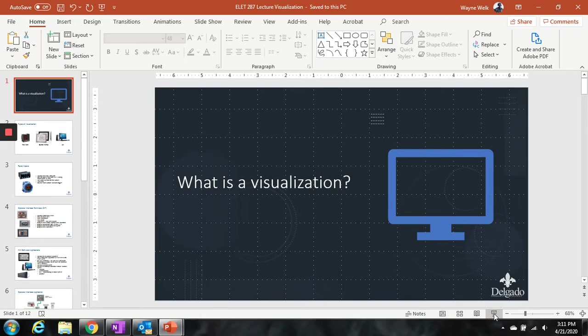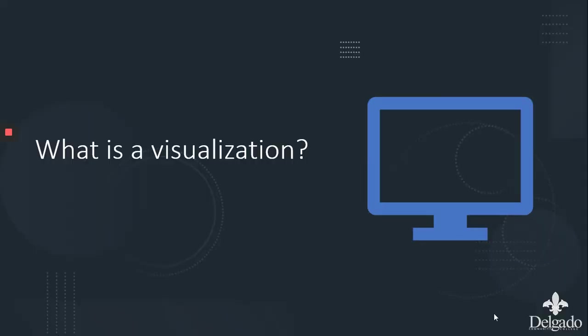We're going to start off by looking at what visualization is as it applies to industrial automation — just a general overview of different forms of visualization.